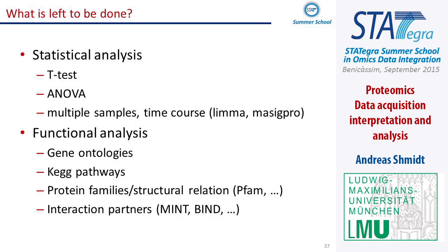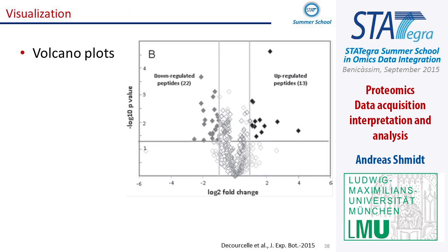Finally, we get to statistical analysis. The t-test is still the most common we use, and some samples use ANOVA. In tools like Lima and MSqRob, you can also perform functional analysis — associating proteins to genes and gene ontologies. If you look at proteomic data with two samples, the volcano plot is still often used: it shows the relative fold change between two samples and the significance of that fold change.